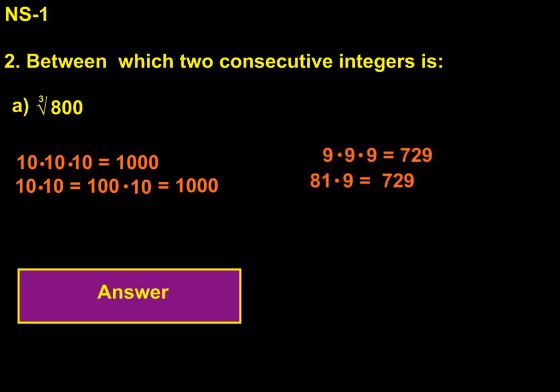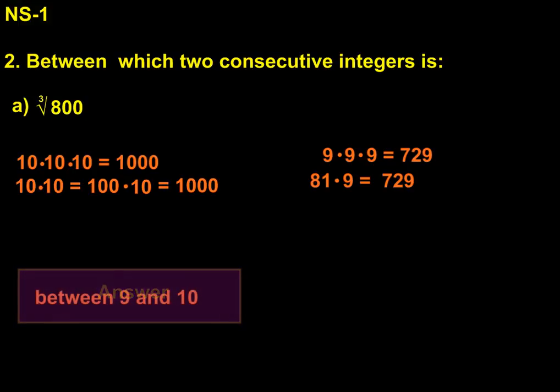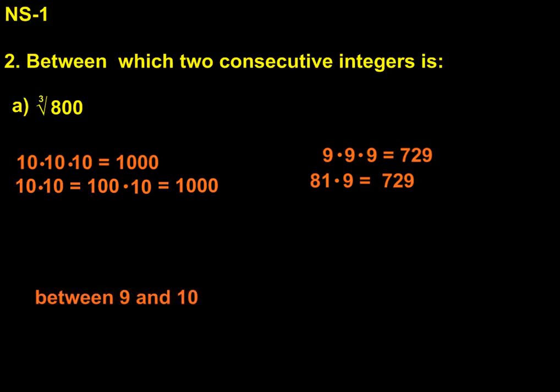9 times 9 is 81, and 81 times 9 is 729, which does fall just to this side of 800. So that works out, and I can say that the two consecutive integers are between 9 and 10.